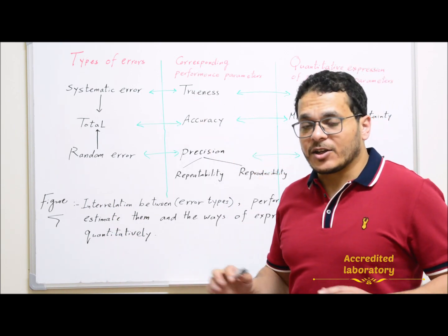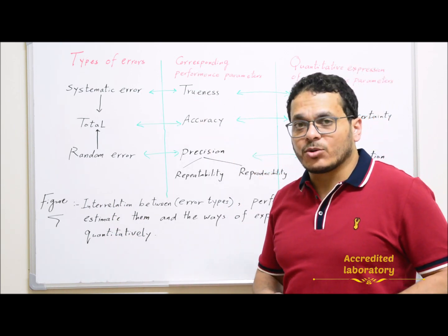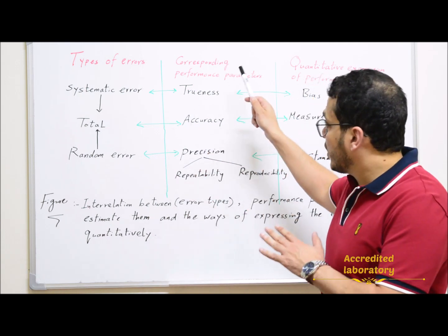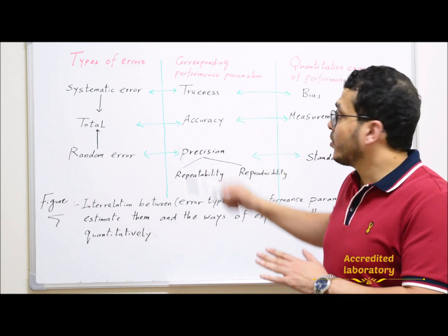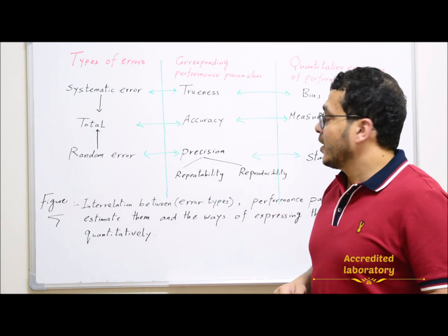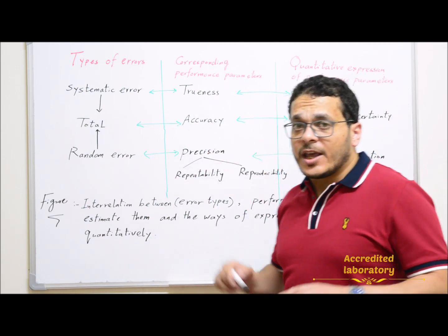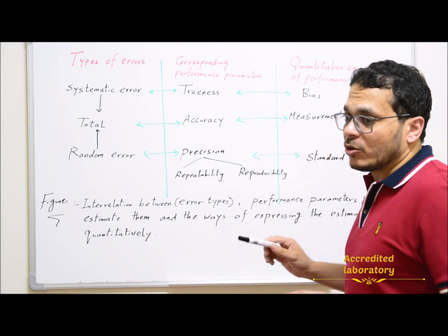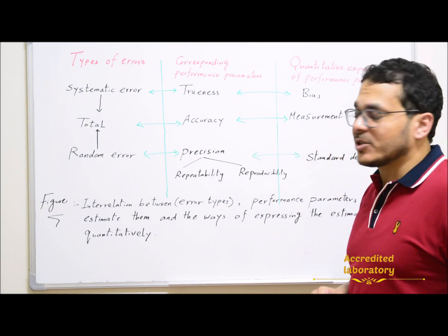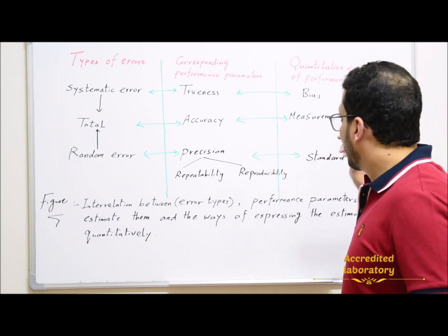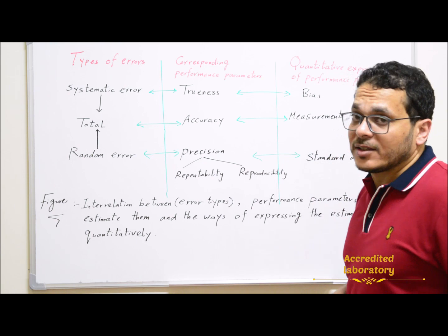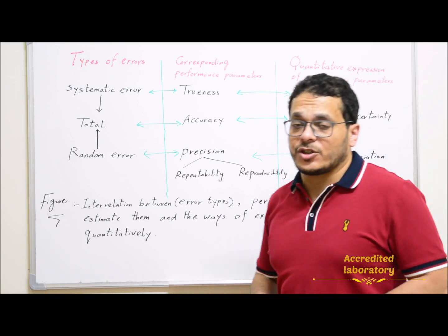Let's look at the interrelations between types of errors — systematic, random, and total errors — and their corresponding performance parameters: trueness, accuracy, and precision. The quantitative expressions of these performance parameters are bias, measurement uncertainty, and standard deviation, respectively.